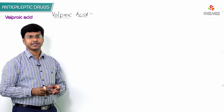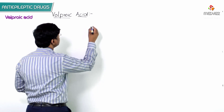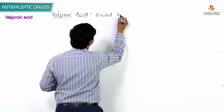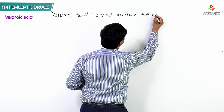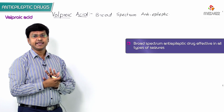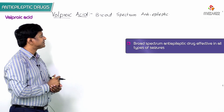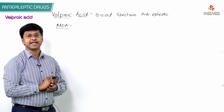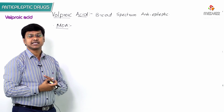Let me discuss valproic acid, a very important anti-epileptic drug. Valproic acid has broad-spectrum anti-epileptic activity, making it effective in all types of seizures. The reason it is effective across all seizure types is that it has multiple mechanisms of action, which is why it is used as a broad-spectrum anti-epileptic drug.